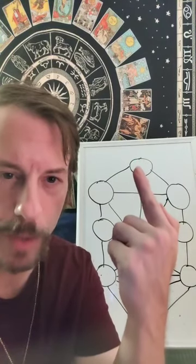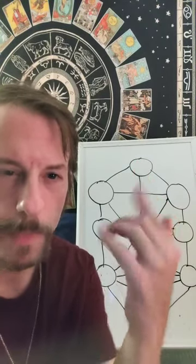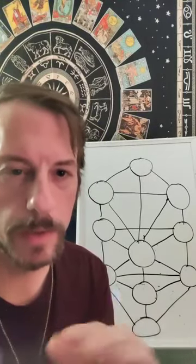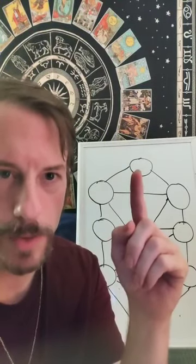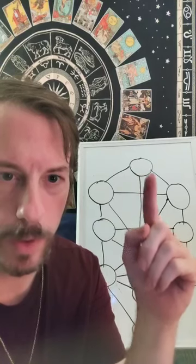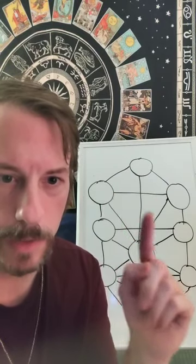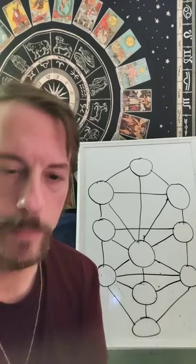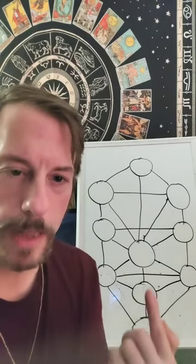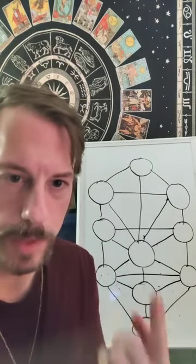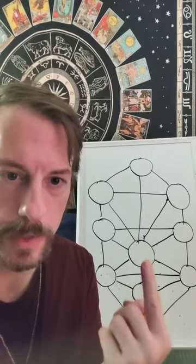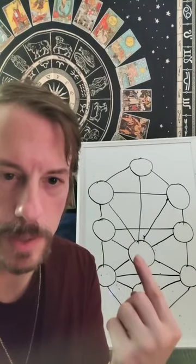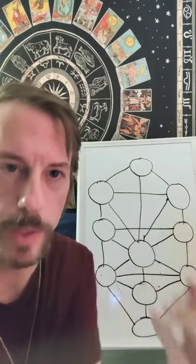Notice that the middle pillar — if you add up the numbers in the Sephirot in order: 1, 2, 3, 4, 5, 6, 7, 8, 9, 10 — and you only add up the middle column, that's 1, 6, 9, and 10. 10 plus 9 is 19, plus 6 is 25, plus 1 is 26.